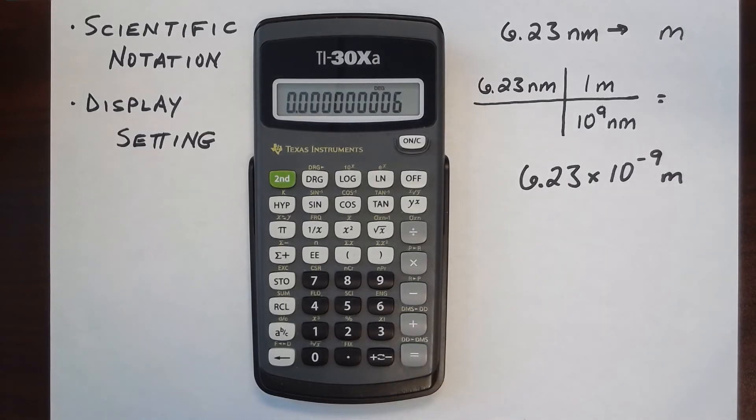And then I get this as my answer, 6 times 10 to the minus 9. However, notice that I've lost two of the significant figures. In order to display those, we can adjust the display setting from a floating decimal to scientific.